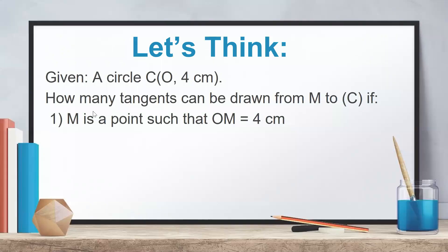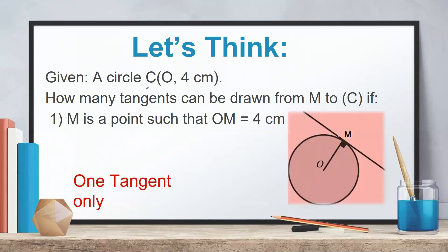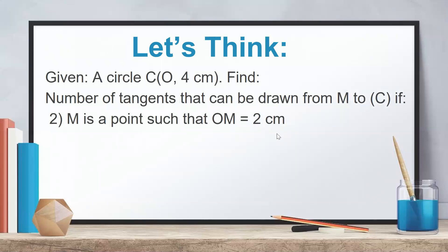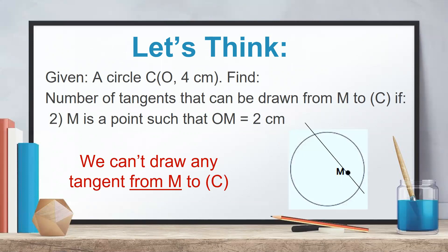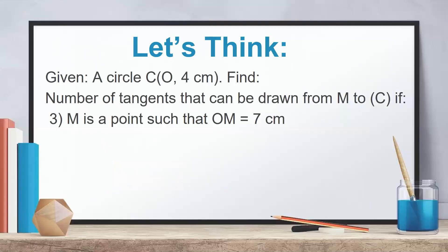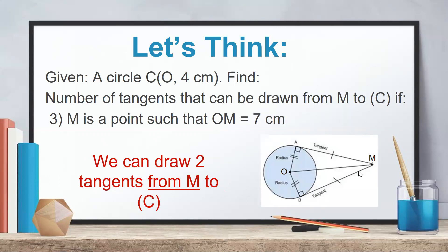Consider a circle C of center O and radius 4 cm. How many tangents can be drawn from point M to C? If OM = 4, the point is on the circle, so we can draw one and only one tangent. If OM = 2, the point is inside the circle, so we cannot draw any tangent — any line through M cuts the circle in two points. If OM = 7, the point is outside the circle, so we can draw two tangents.